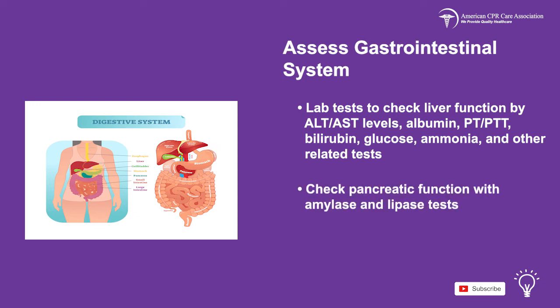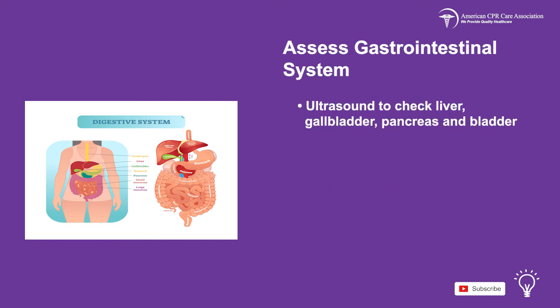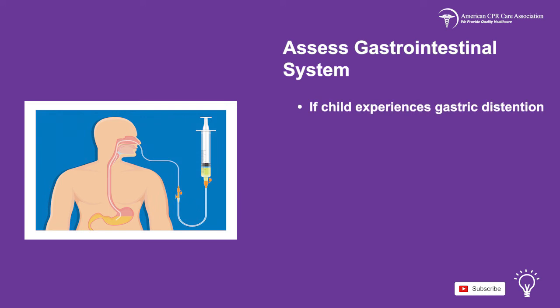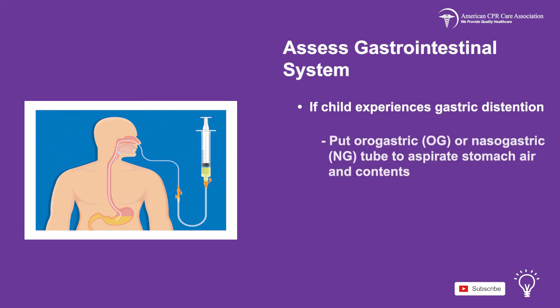Check pancreatic function with amylase and lipase tests. Take an ultrasound to check the liver, gallbladder, pancreas, and bladder. Get an abdominal CT scan to check for trauma. If the child is experiencing gastric distension, put in an orogastric or nasogastric tube to aspirate stomach air and its contents.